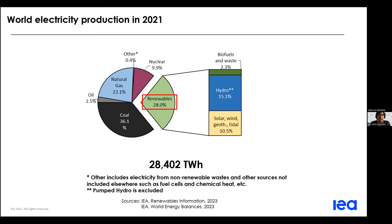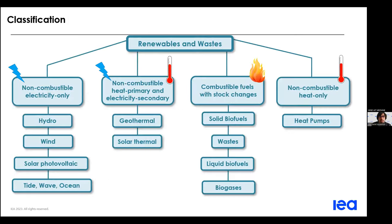This leads me to the final slide of this first section, where you can see the world electricity production, in which renewables represent 28% in 2021. Within renewables, hydro, which is one of the oldest renewable technologies, is the most widespread. Solar PV and wind are the two that have grown fastest in the last years, posing new challenges for power sector management since they are intermittent — generation does not always match demand and they are often unpredictable. I invite you to follow the strategy proposed by the agency to face these challenges.